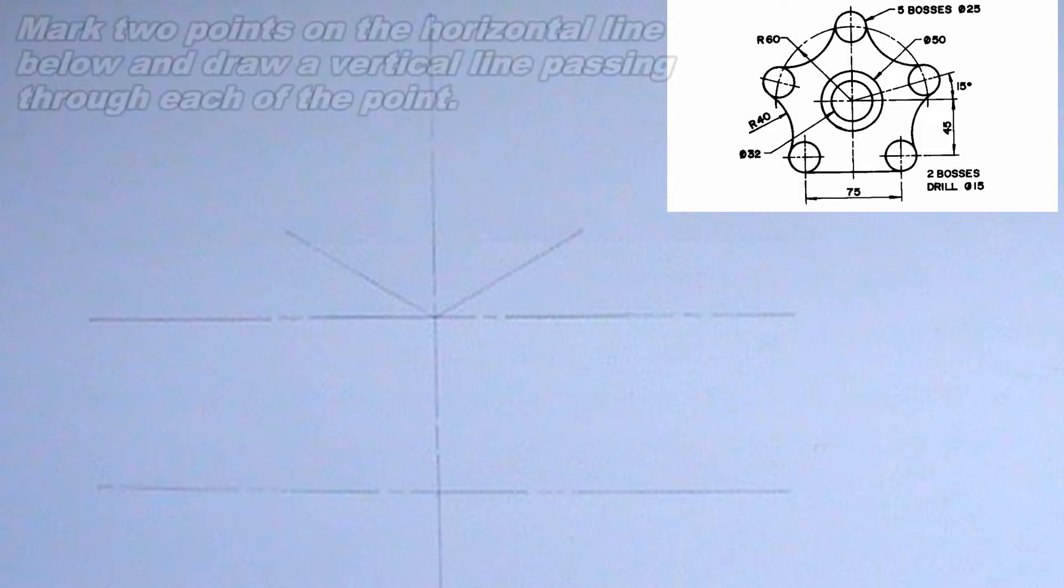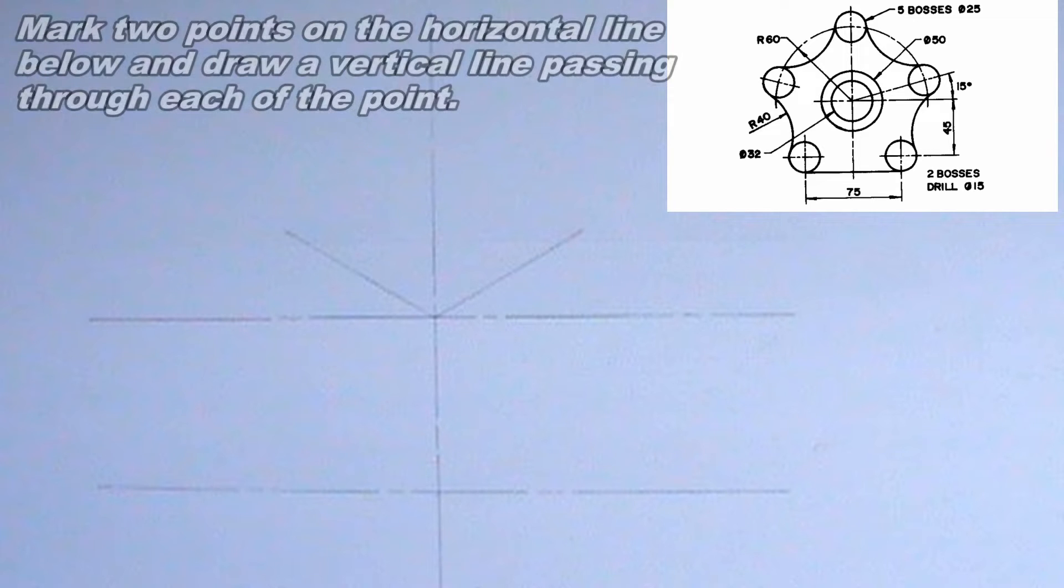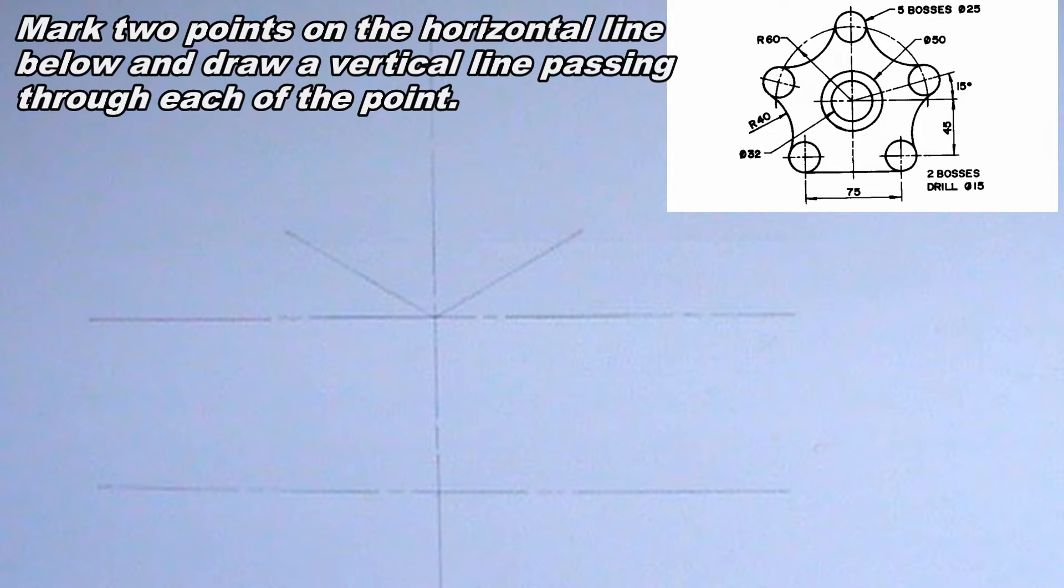Next, I will mark two points on the horizontal line below. The two points should be 37.5 mm from the point where the vertical line intersects the horizontal line. After marking the points, I will draw a vertical line passing through each of the points.